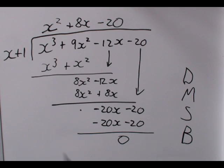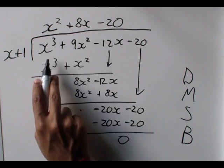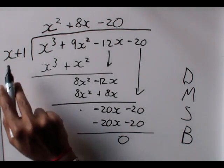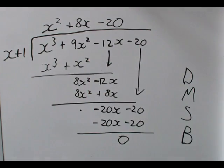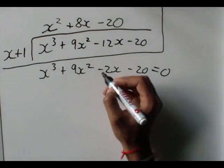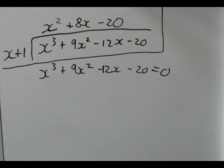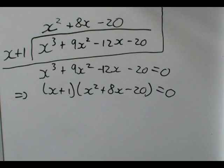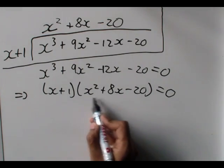So, what we have here is that we say x plus 1 goes into x cubed plus 9x squared minus 12x minus 20 this many times. So, x squared plus 8x minus 20 times. So, if I said this times this, I must get this. And that is what we need to factorize. Now we can write, our original equation was x cubed plus 9x squared minus 12x minus 20 is equal to 0. Now, that is now this expression. Because we have this times this must equal to this. And now, we've started the factorization process.